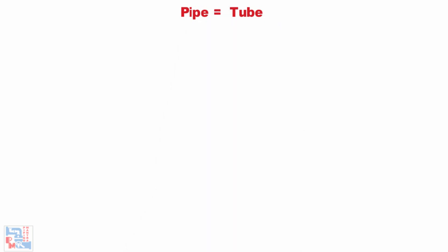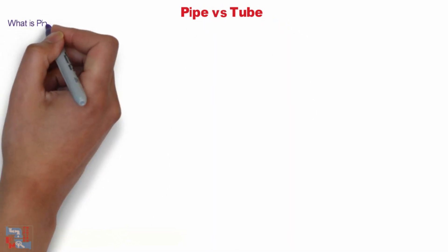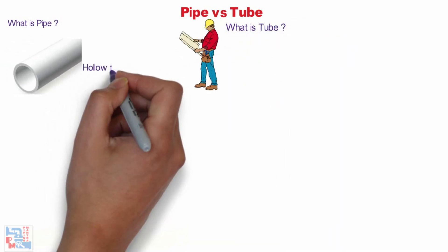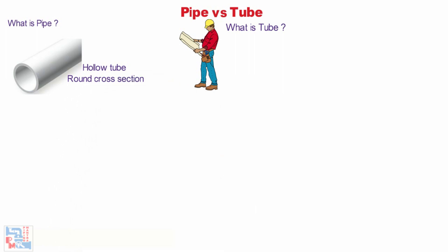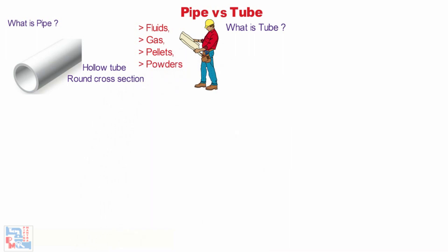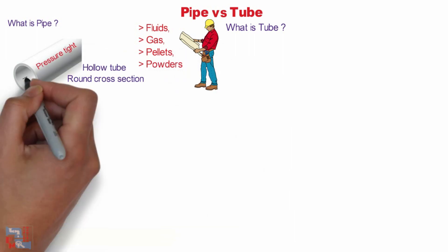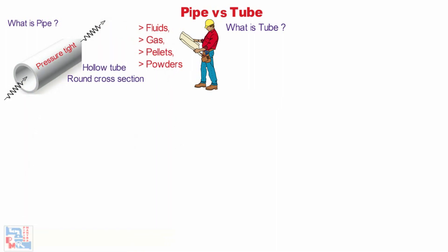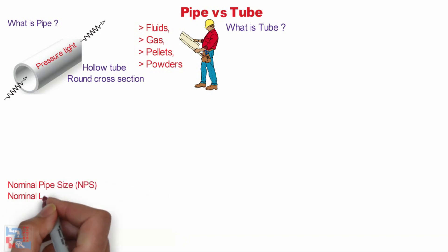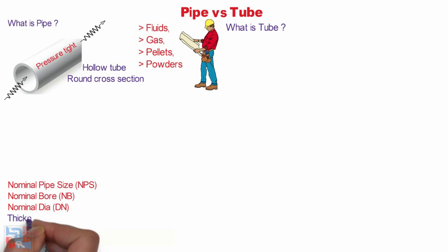Most people use the words pipe and tube interchangeably and think that both are the same. However, there is a significant difference between the two. We need to know exactly what a pipe is and what a tube is. In layman terms, a pipe is a hollow tube with round cross-section for the conveyance of products like fluids, gases, pallets, powders and more. A pipe is a pressure-tight cylinder used to transport fluids.